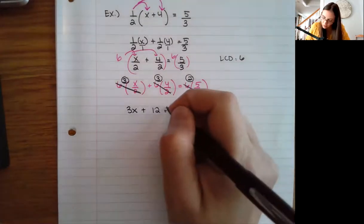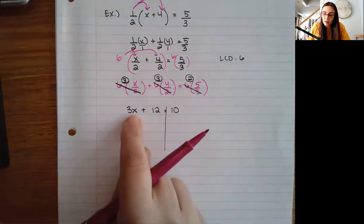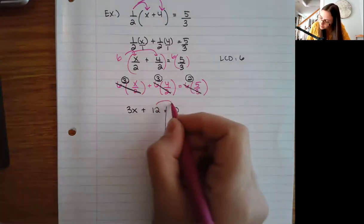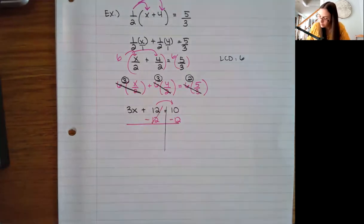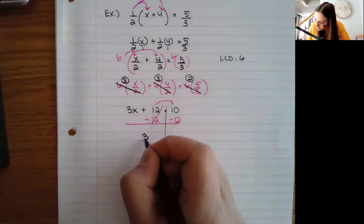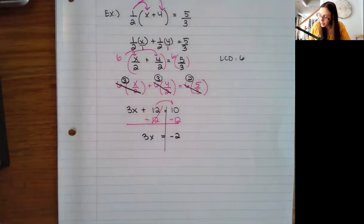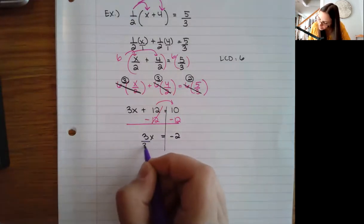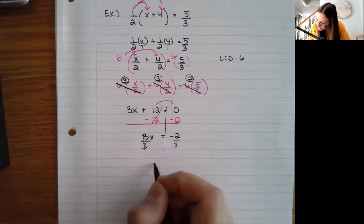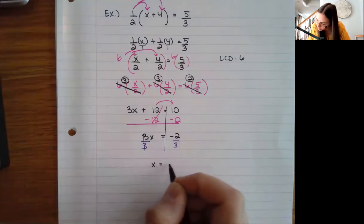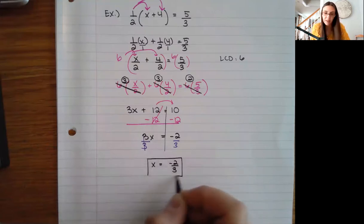I go ahead and start solving. My goal is to get x by itself, so I bring the 12 to the other side. That gives 3x = -2. I divide both sides by three and get x = -2/3. Two thirds is already simplified, so that is my final answer.